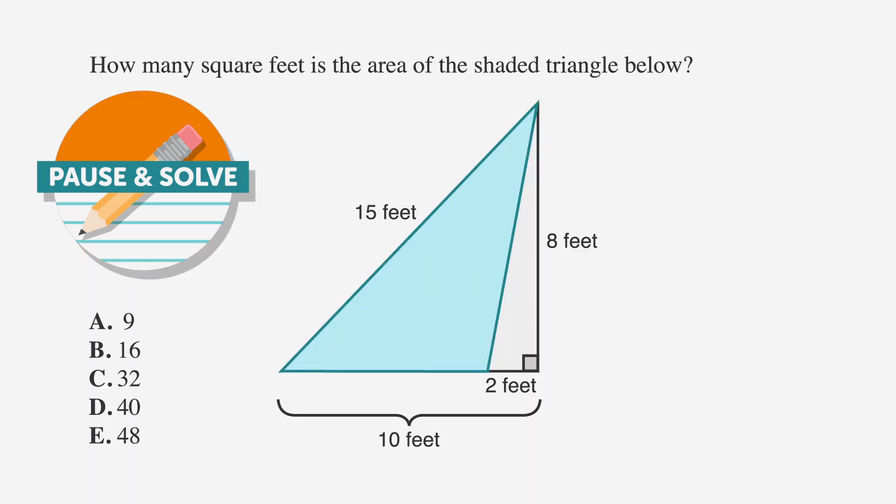The question states, how many square feet is the area of the shaded triangle below? A is 9, B is 16, C is 32, D is 40, and E is 48.